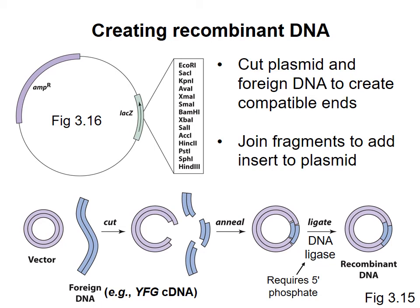The process is shown across the bottom of the screen. You cut both the plasmid and your DNA, such as the cDNA for your favorite gene, with restriction enzymes that match each other. In this case we're using overhangs, or sticky ends. Then you incubate the fragments together to allow the sticky ends to anneal to each other. Adding DNA ligase results in repair of the sugar phosphate backbone. Note that DNA ligase requires a 5' phosphate to be present in order to join two strands together. The result is an intact circular DNA that contains the desired insert. The product is called a recombinant DNA molecule because two pieces of DNA from different sources have been combined together.